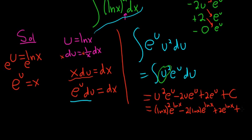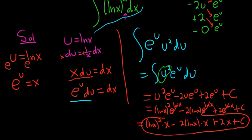plus c. So we end up with ln x quantity squared, times x, minus 2 ln x, times x, plus 2x, plus c. All of the e to the ln x's became x's. And that is the final answer.